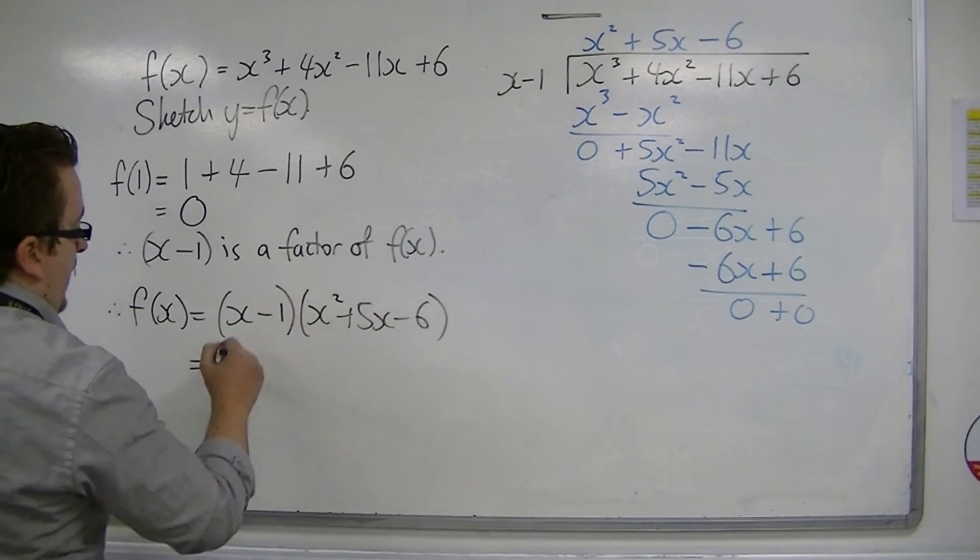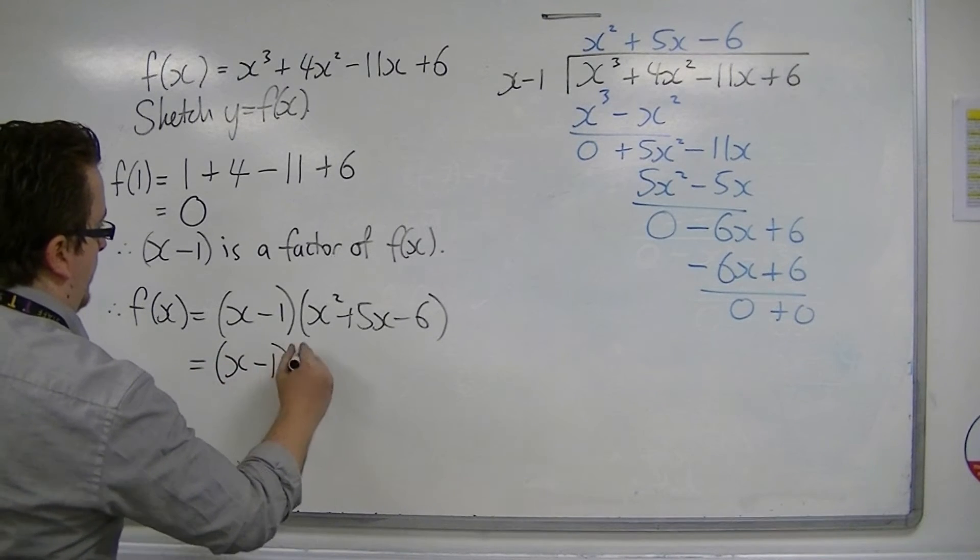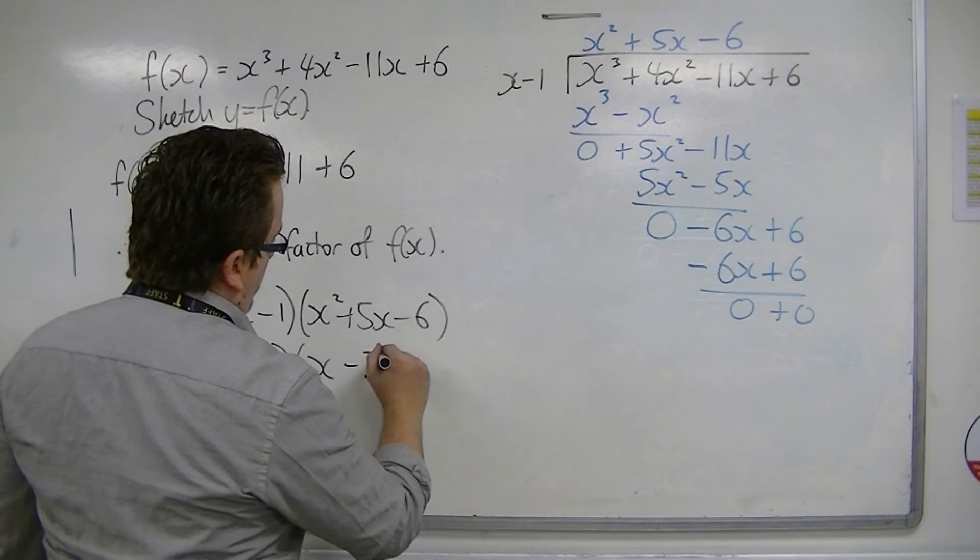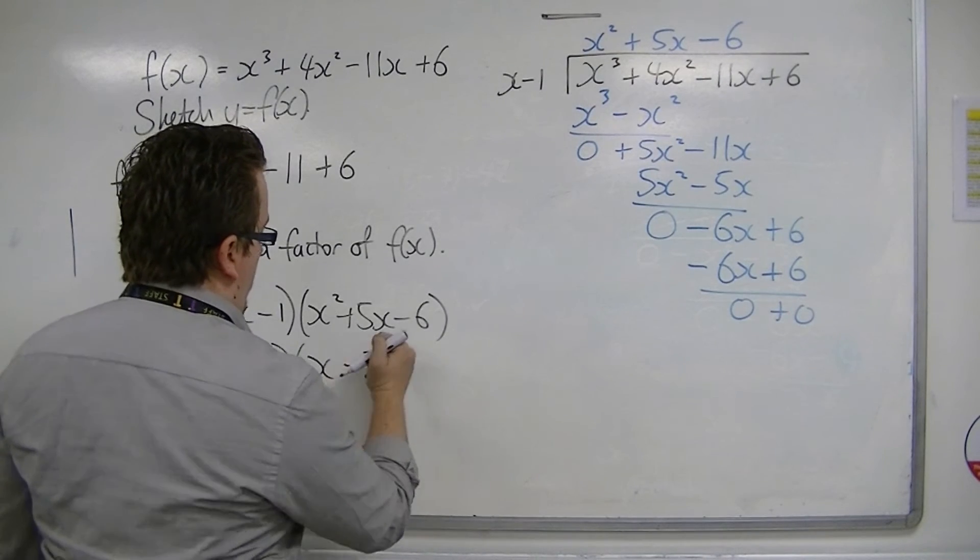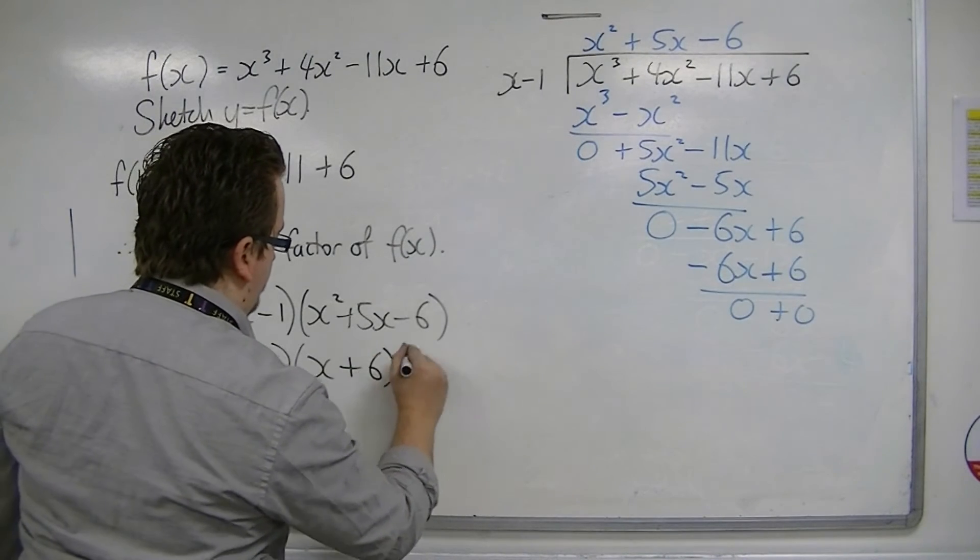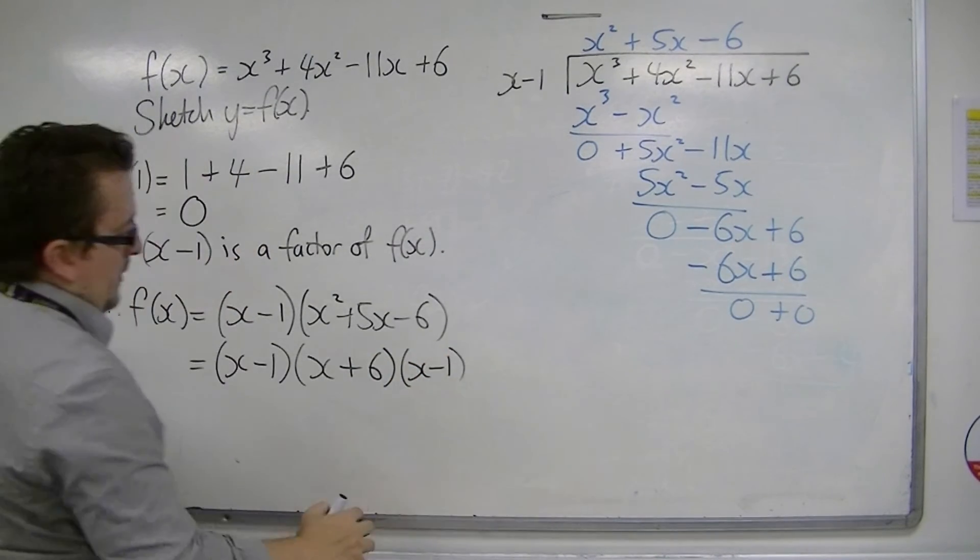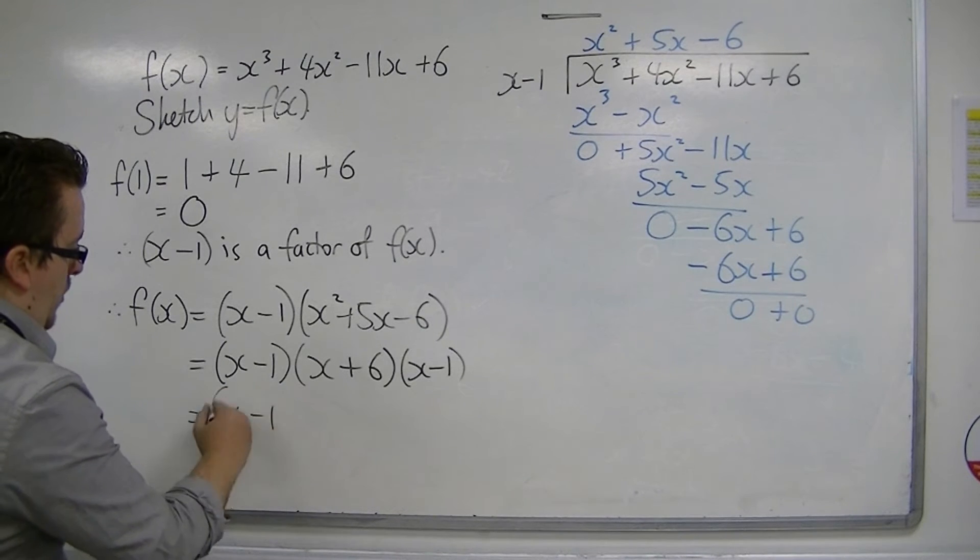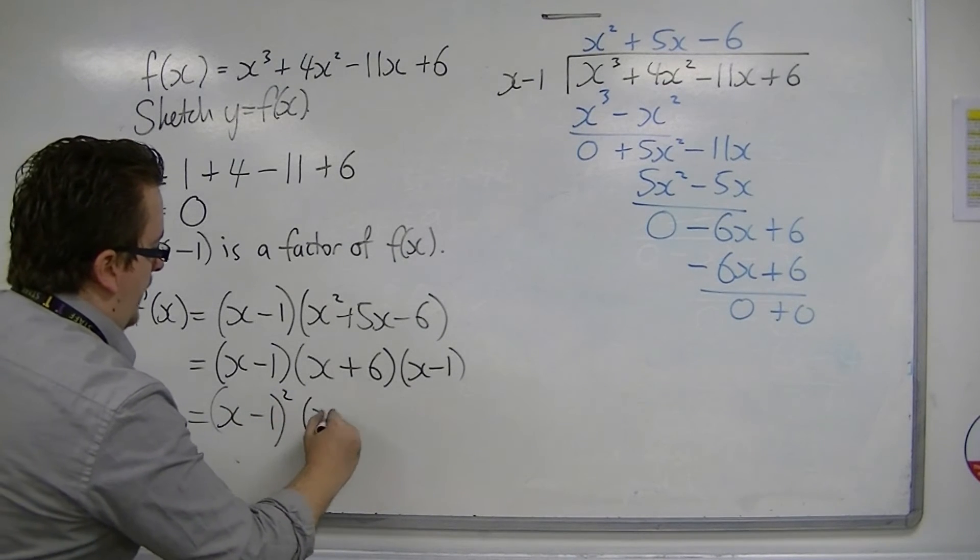That quadratic can be factorized. Plus 6 minus 1. So actually we've got two x - 1's there, so we could write that as (x - 1)²(x + 6).